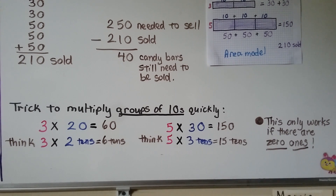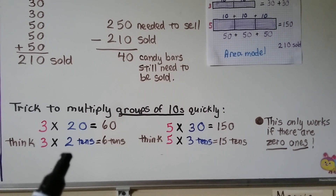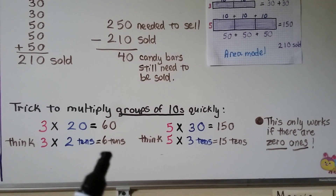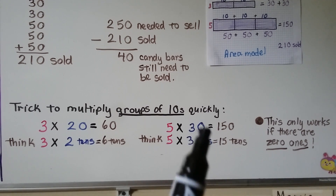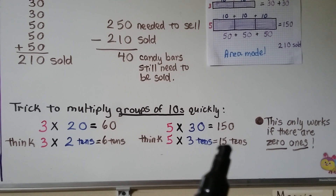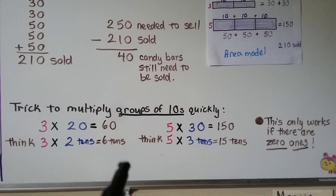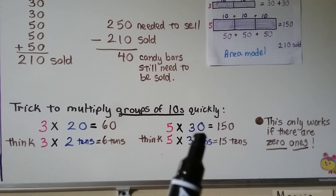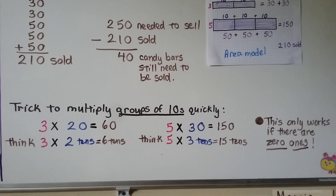Here's a trick to multiply groups of tens quickly. For 3 times 20, think 3 times 2 tens — 3 times 2 is 6, so that's 6 tens, which equals 60. For 5 times 30, think 5 times 3 tens — 5 times 3 is 15, so 15 tens equals 150. Be careful: this only works if there are zero ones in the factor. We'll talk more about that in the next video.